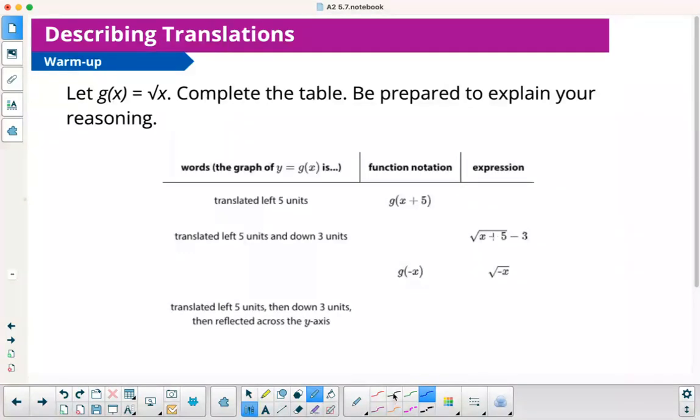The first thing is g of x equals the square root of x. Complete each table. Be prepared to explain your reasoning. If I want to translate 5 left, it's going to be g of x plus 5. So basically I'm replacing the x with x plus 5, so my expression is going to be the square root of x plus 5.